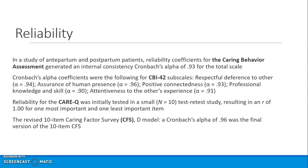Here are some examples of reliability. In a study of antepartum and postpartum patients, the reliability coefficient for the Caring Behavior Assessment yielded a Cronbach's alpha of 0.93 for the total scale. For the CBI-42, the subscale Cronbach's alphas are all very high, which means you may want to decrease the number of items — which was done later.